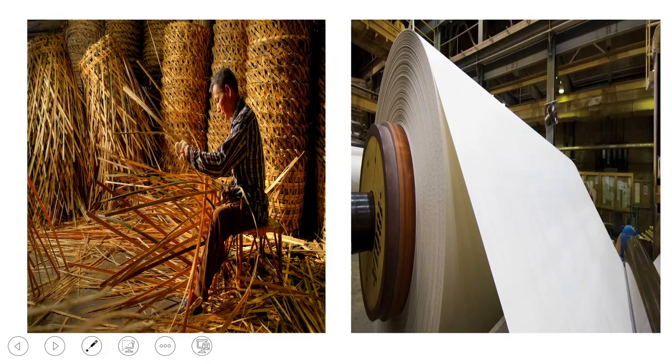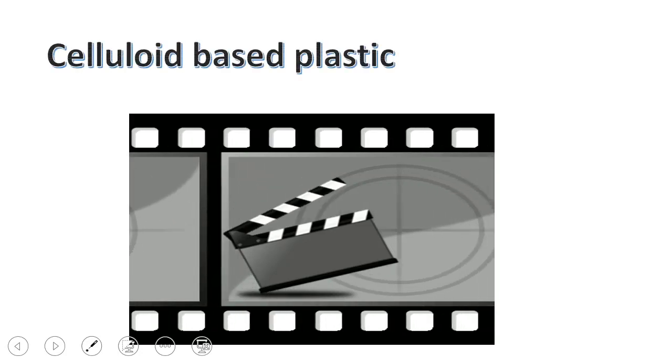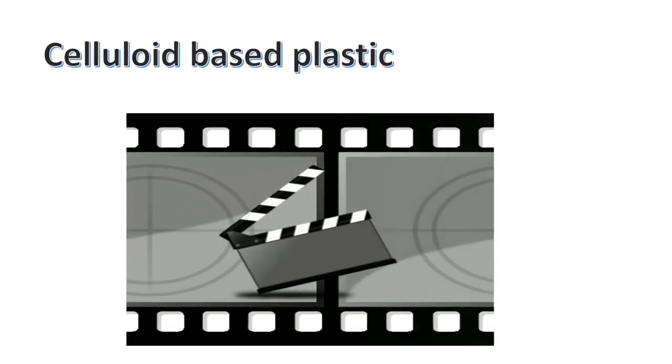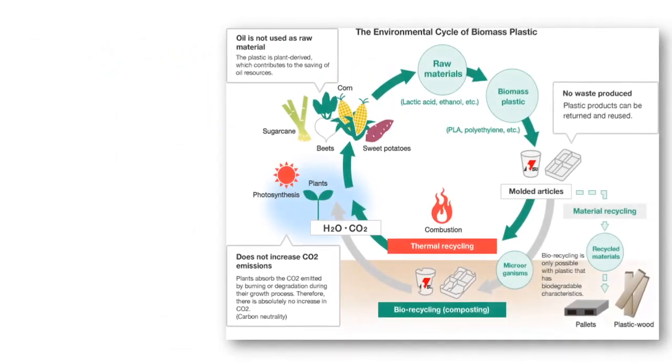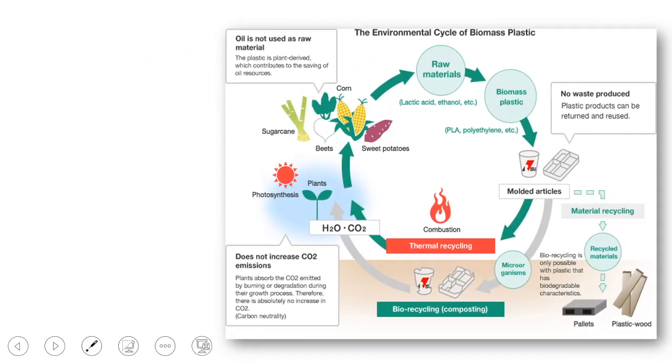Plant fibers are used in making paper and baskets. Moving to another application: bioplastics. Bioplastics have been used since 1869, when billiard balls were first made from bioplastic, though that did not work well as the material could catch fire easily. Bioplastic was also used in photographic and movie film as celluloid-based plastic.